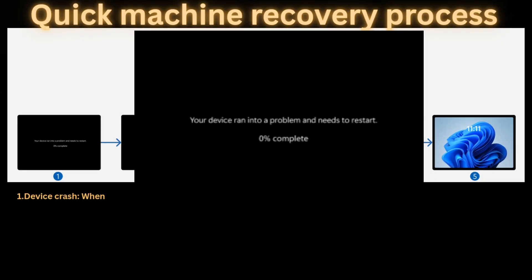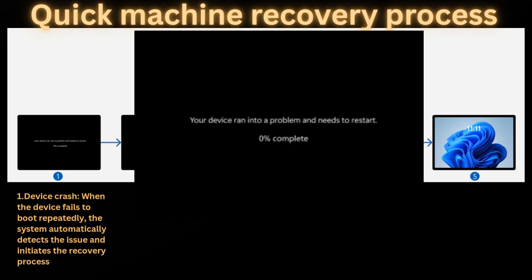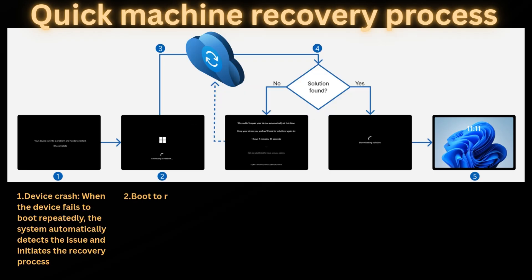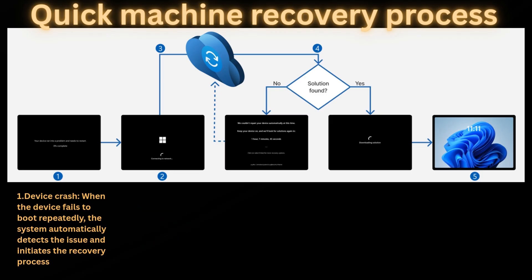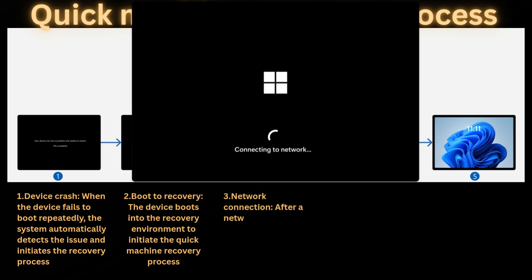Now let's understand how the Quick Machine Recovery process works. When a device fails to reboot repeatedly, the system automatically detects the issue and initiates the recovery process. The device boots into the recovery environment to initiate Quick Machine Recovery. After a network connection is established, the device scans Windows Update for remediation.